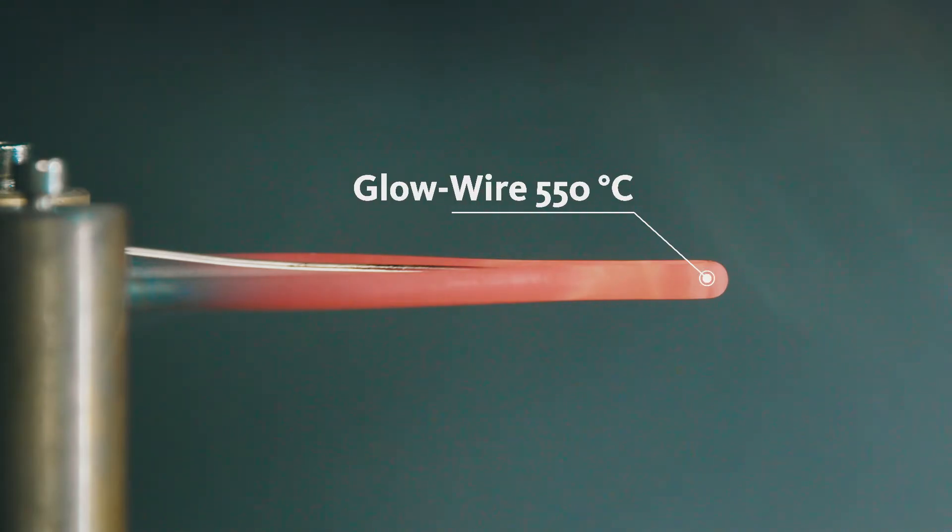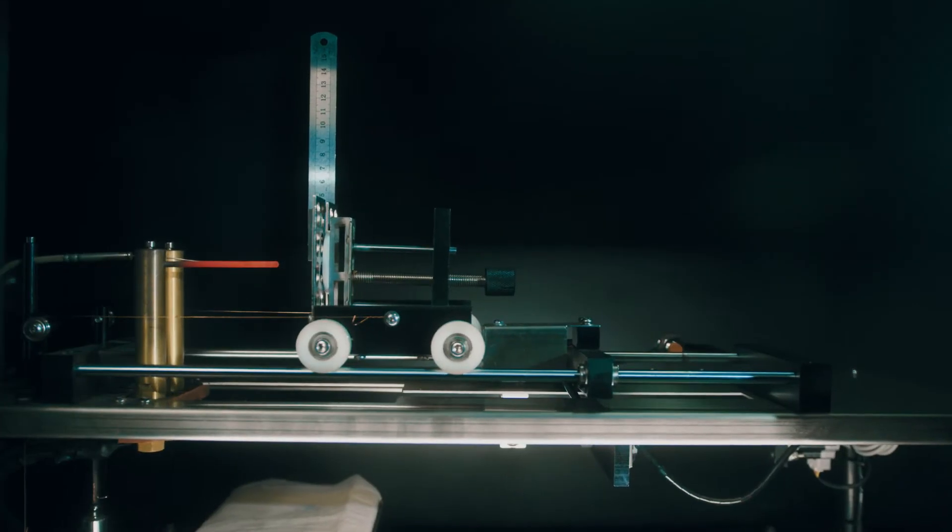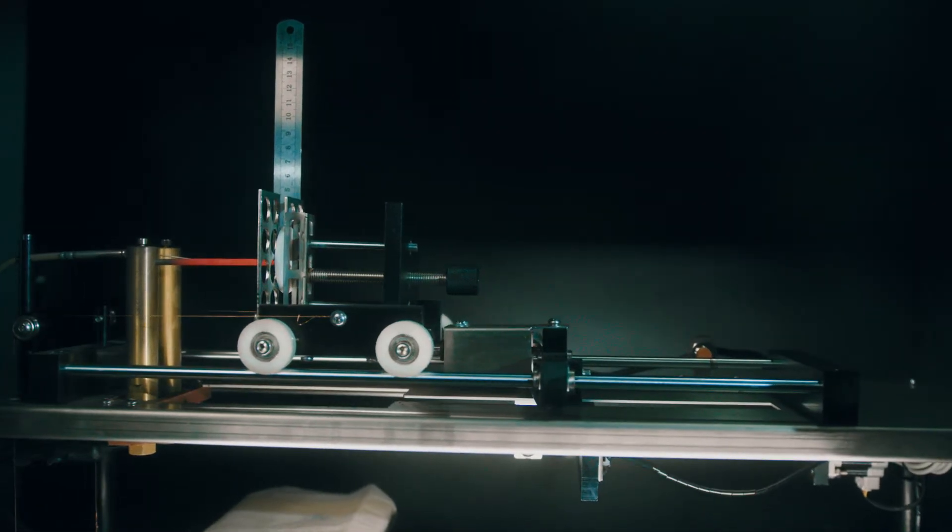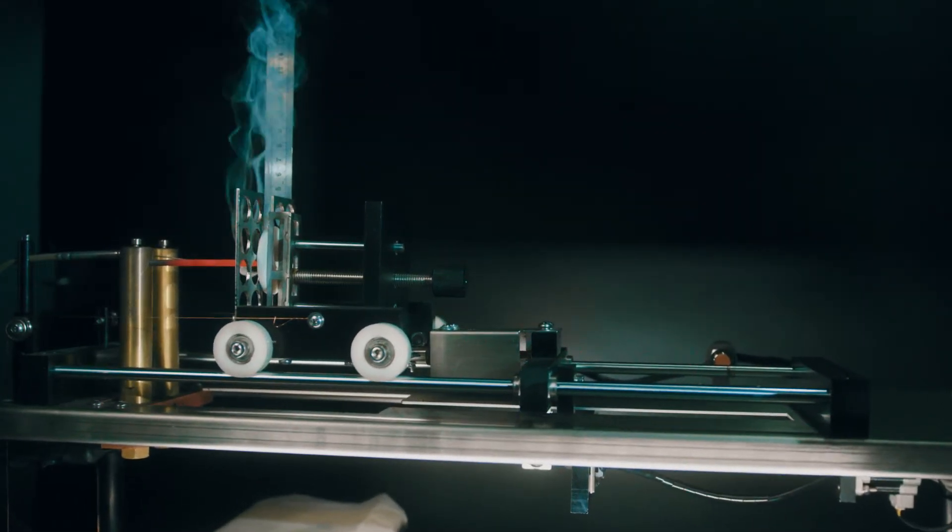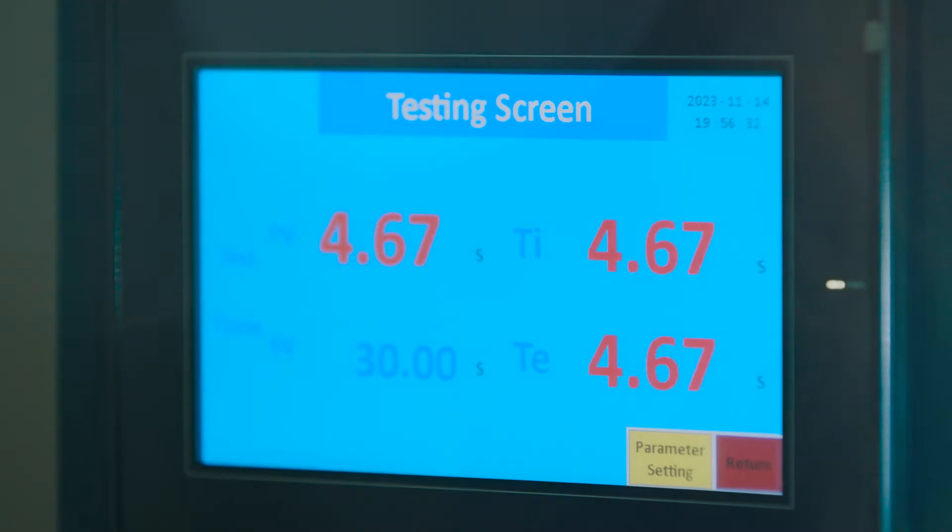The temperature of the normed glow wire is 550 degrees Celsius. The glow wire is applied for a duration of 30 seconds.